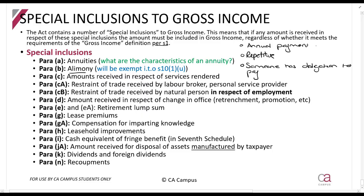Someone having an obligation to pay means someone must have a legal obligation to pay you — it can't just be an informal gesture. If you receive an alimony payment from your ex-spouse after divorce, that will be included in gross income, but you'll also see the full amount will be exempt in terms of section 10(1)(u).